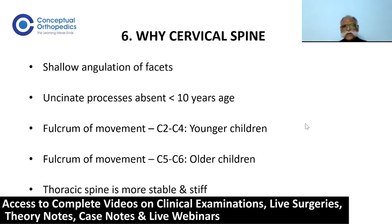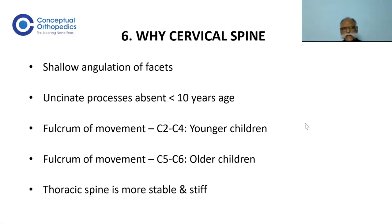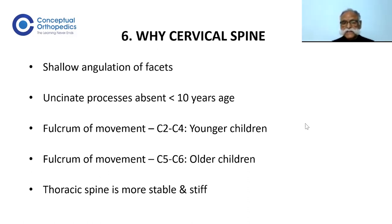The fulcrum of movement in younger children up to age 5 years is at C2-C3 level, while below 10 years it moves to C3-C4 level, and in older children the cervical fulcrum of movement is around C5-C6. The thoracic spine is more stable and stiff, which is why spinal cord injuries in children are rare in the thoracic spine region.